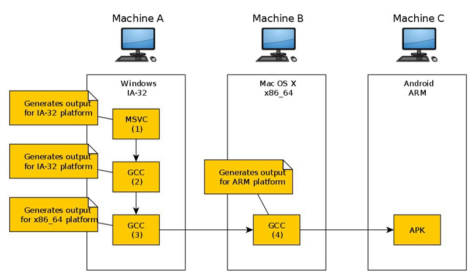Cross-compilers are distinct from source-to-source compilers. A cross-compiler is for cross-platform software development of machine code, while a source-to-source compiler translates from one programming language to another in text code. Both are programming tools.